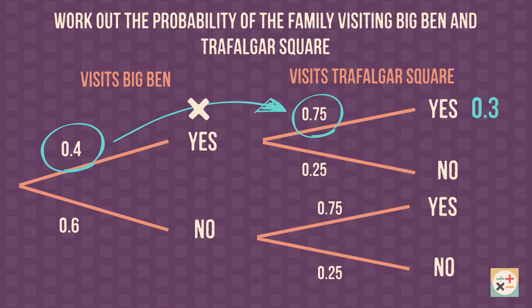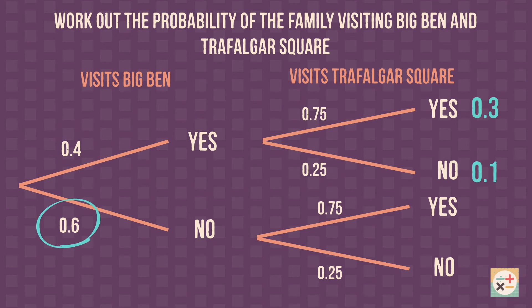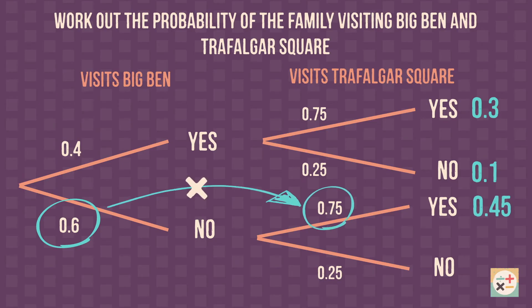We can also check that the tree diagram is correct by calculating all of the end probabilities in the same way and then adding them all up. They should all add up to 1.